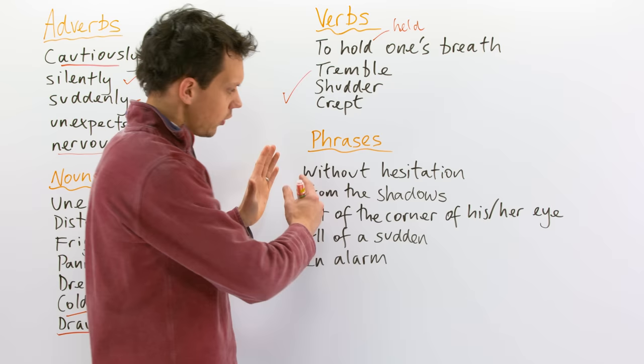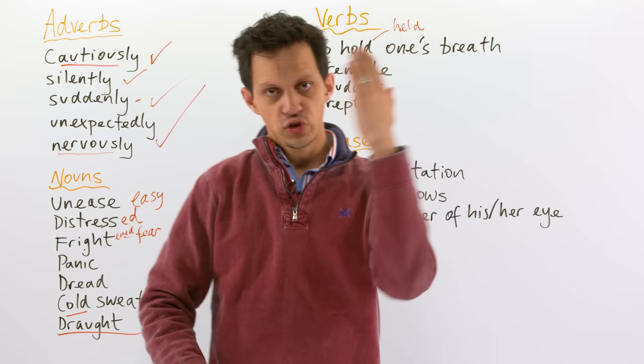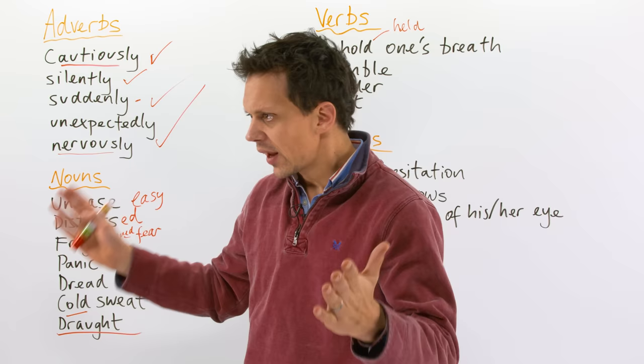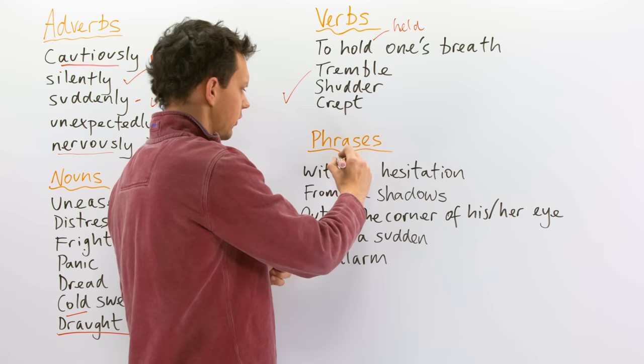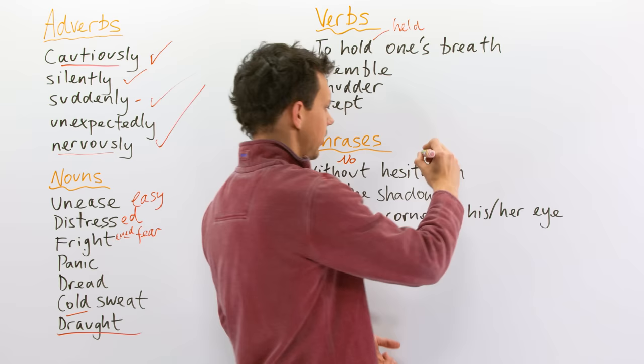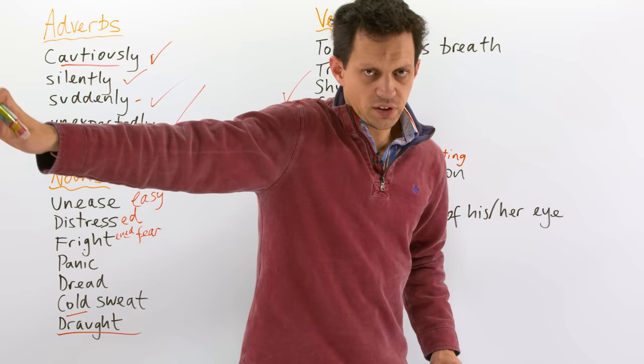Phrases. Now, these are all phrases that you would put at the start of a sentence. Without hesitation, the boy strode into the next door room, he opened the door, and he saw whatever he saw. Without hesitation. So that means no. Hesitation means waiting. So, not waiting anymore, the boy decided to go and find out what was out there.